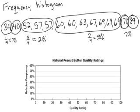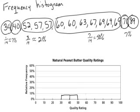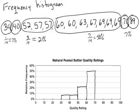Now that the percents are figured out, I just need to go ahead and put them in my histogram. In the 30 to 40 interval I'm going to fill up to about 7. From 40 to 50, the same. From 50 to 60 I want 21, so I'm going to go just over the 20 line. From 60 to 70 I need to go all the way up to 50. From 70 to 80 again 7%, and from 80 to 90 again about 7%. I can go ahead and color in all of those bars so that it makes a nice histogram, and that's all there is to making a frequency histogram.